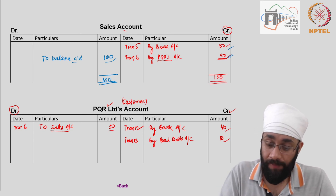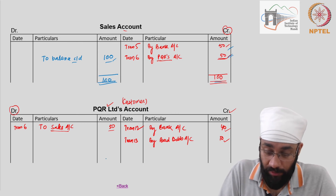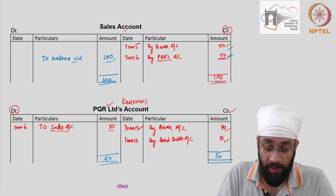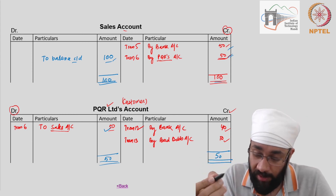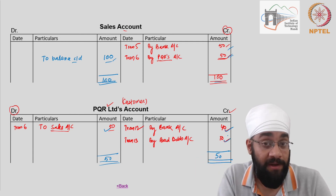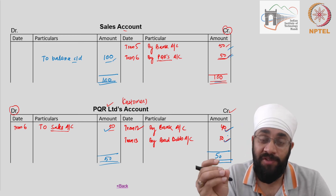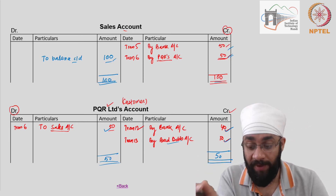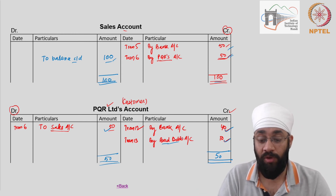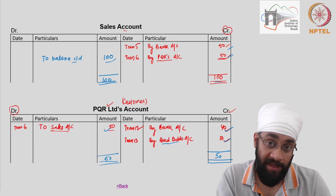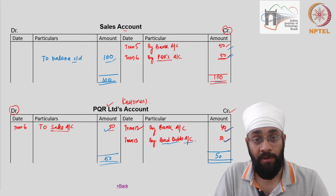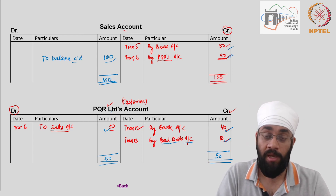PQR's account again interestingly has 50 on both sides. You sold goods worth 50 to PQR, he paid you 40 and the remaining 10 became bad debts — you have given up hopes of recovering this 10. So instead of writing this as a balance carried down, we have written it as bad debts. You cannot carry this balance because it is highly improbable you will recover this amount, so it is considered a loss. The account has been closed — no more money to be recovered from PQR.